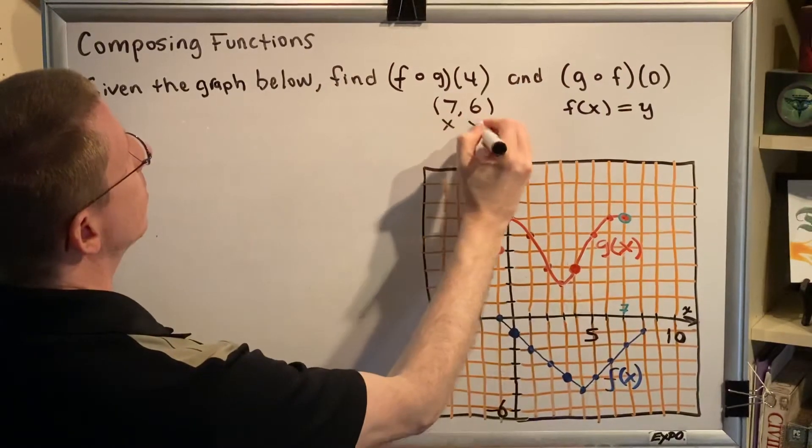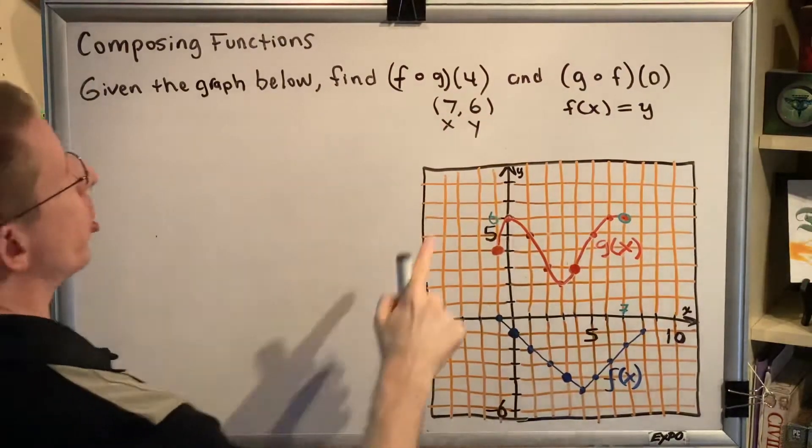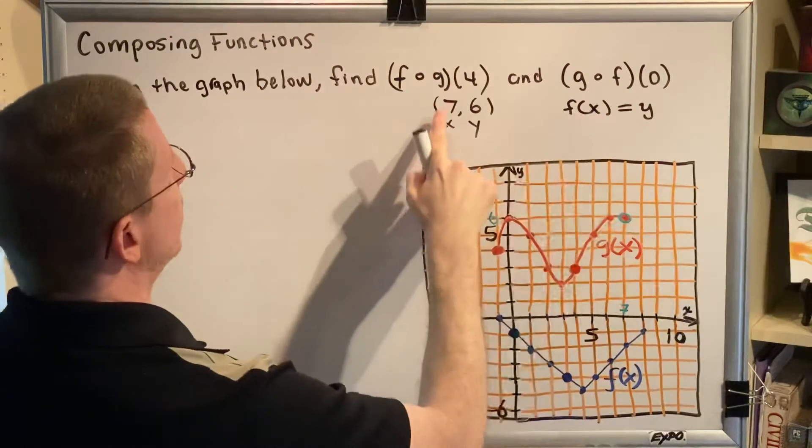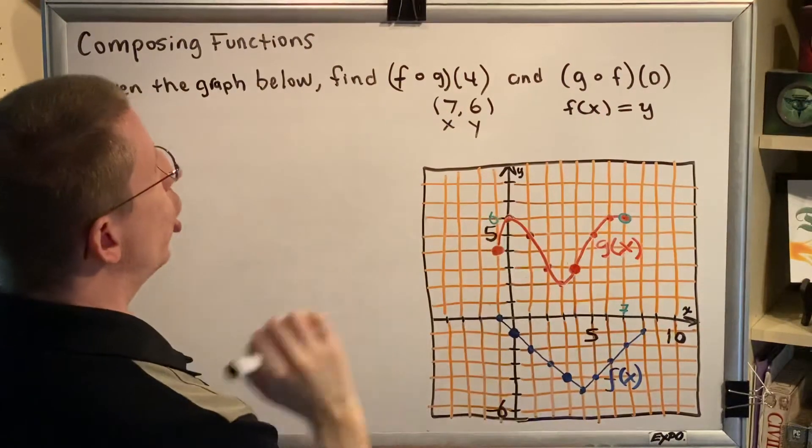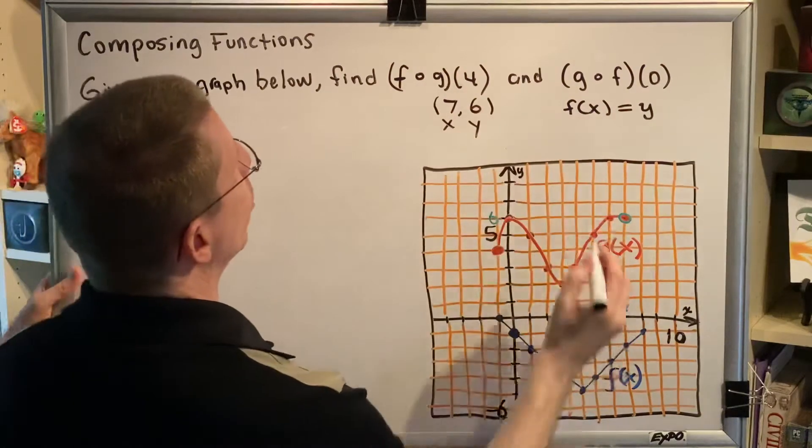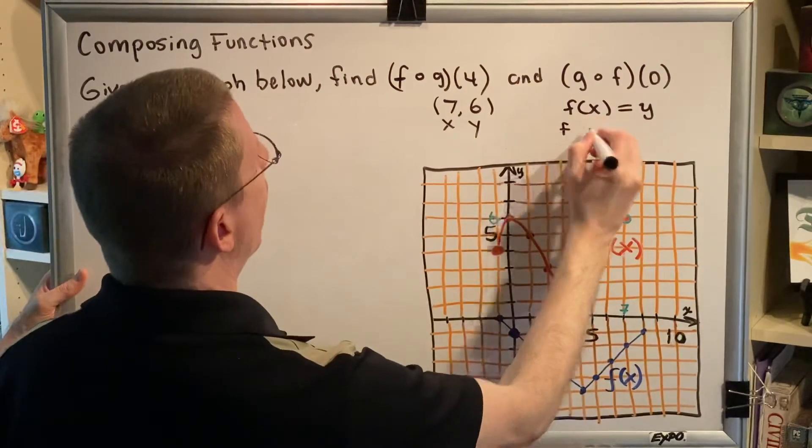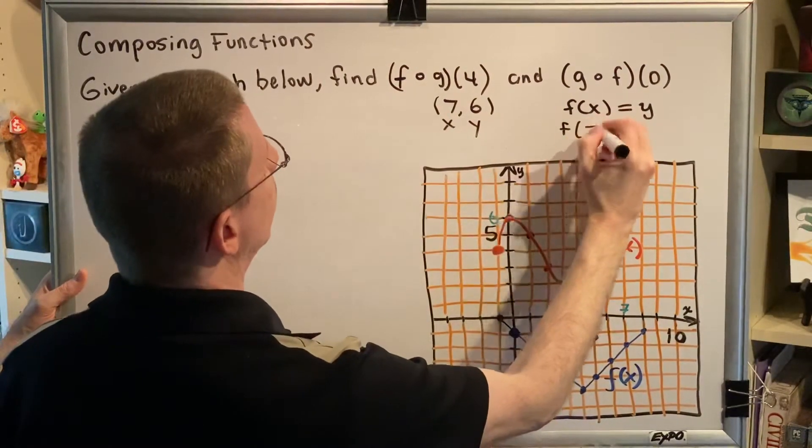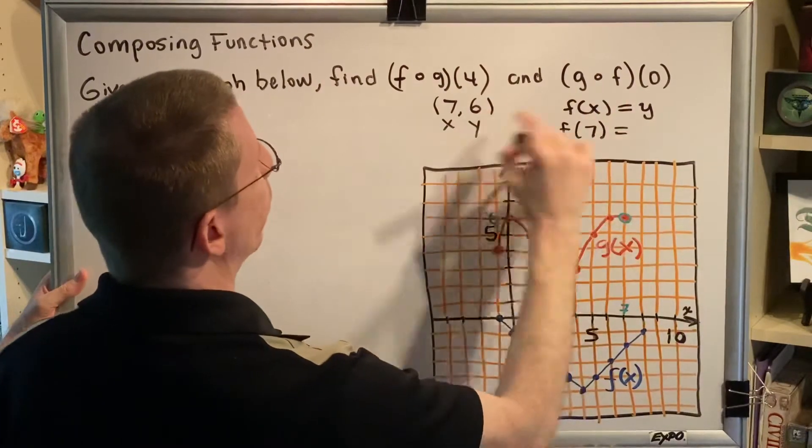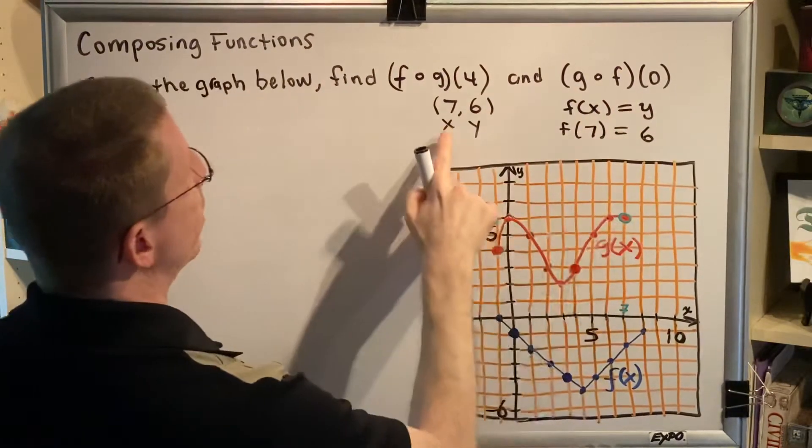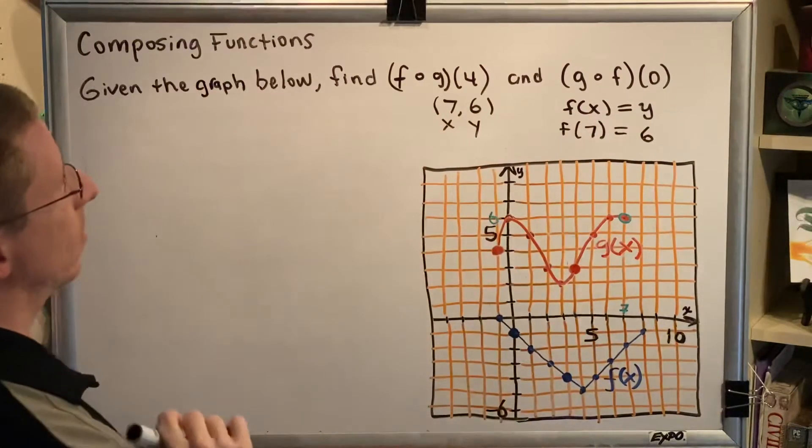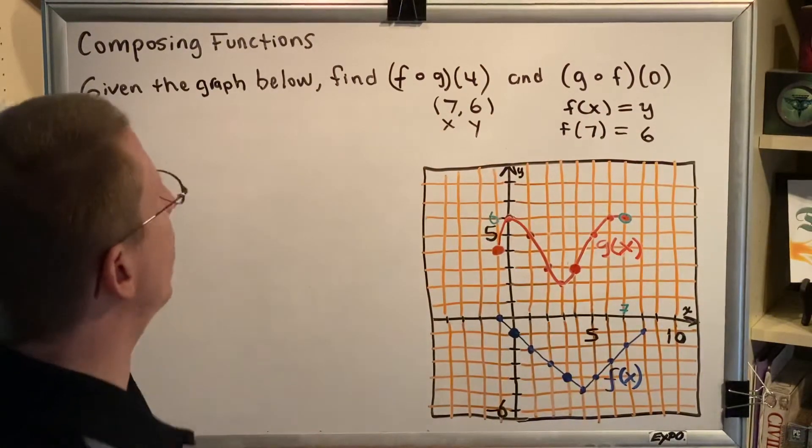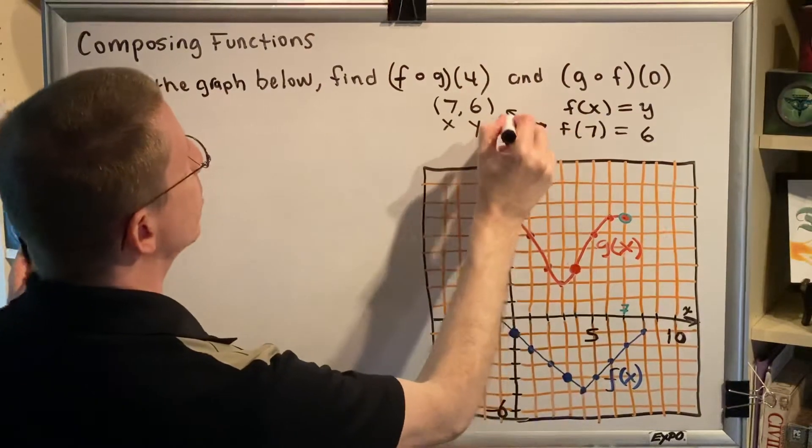Let's see if we can turn our ordered pair into function notation using this idea that f of x equals y. An ordered pair consists of an x and a y. So if we replace the x with 7 and the y with 6 in our statement here, we'll turn our ordered pair into function notation. For example, f of 7 equals 6. This helps us understand the connection between ordered pairs and function notation.